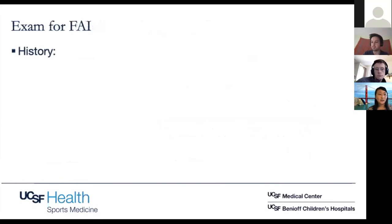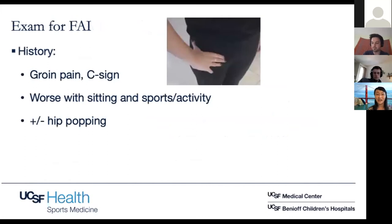Looking at the typical exam: in terms of history, patients will classically describe groin pain. I'm always looking for patients pointing at their groin, or they might show you the C sign — they take their hand and say the pain is in this distribution. Usually the pain is worse with sitting, worse with sports and activity. They can also describe hip popping or clicking.